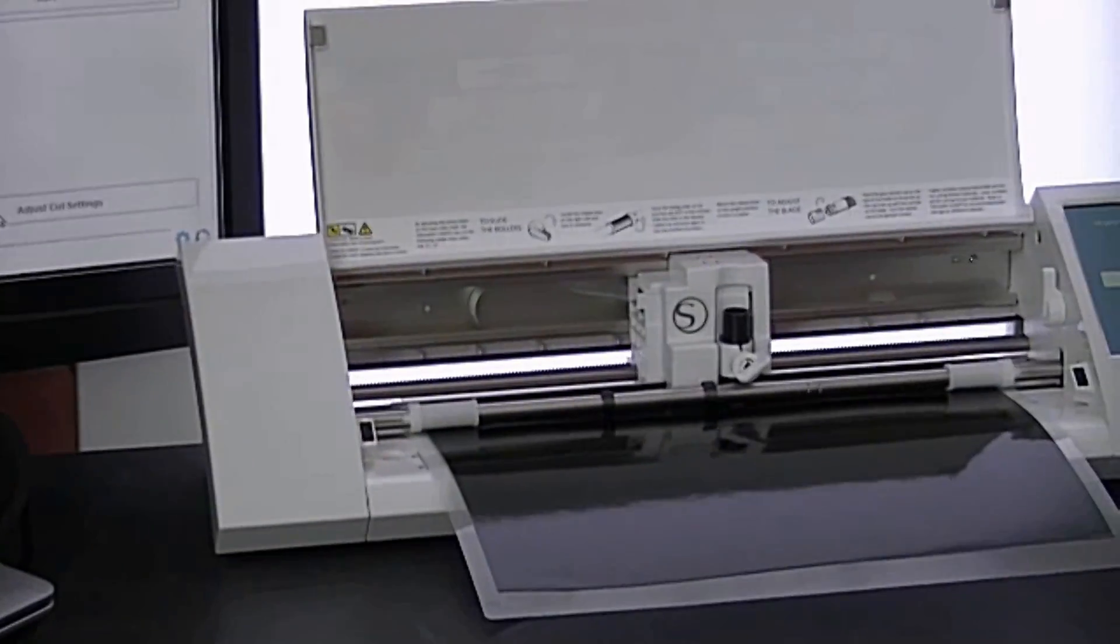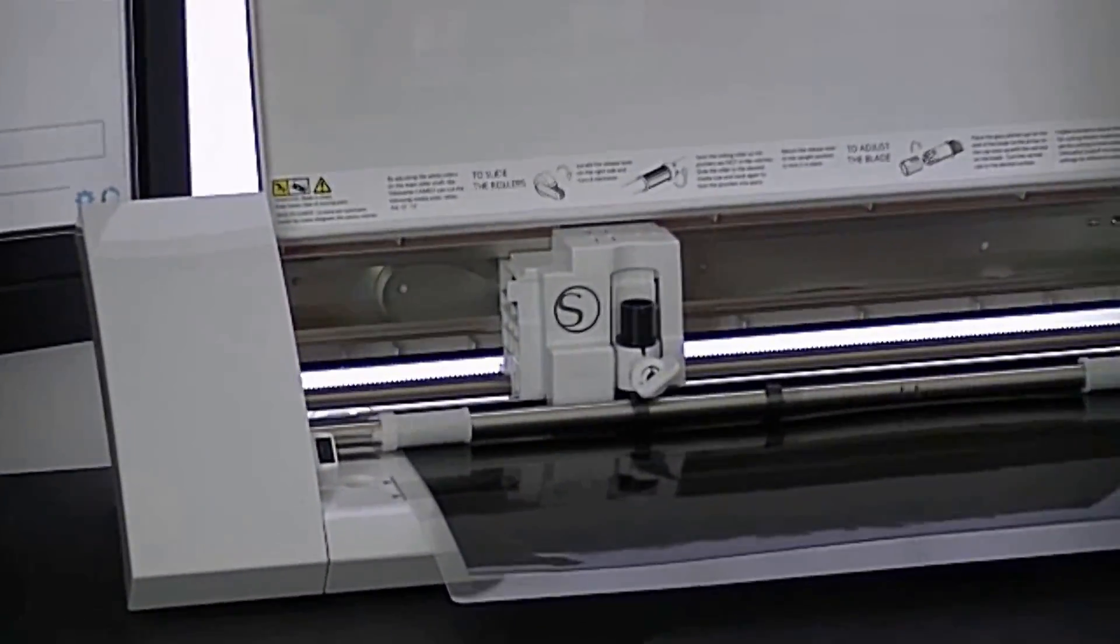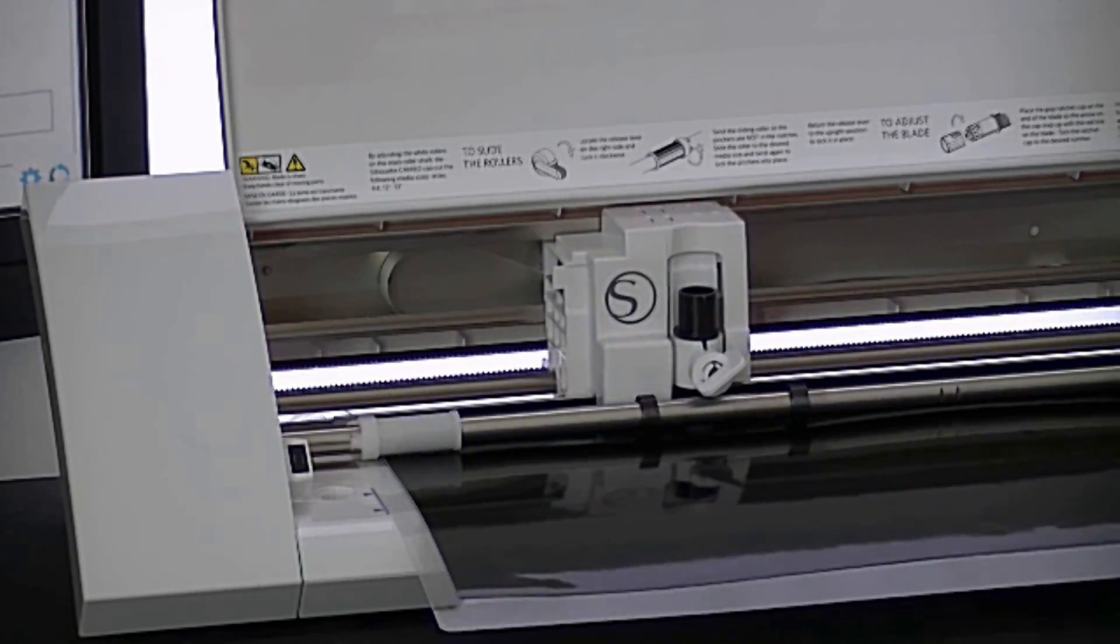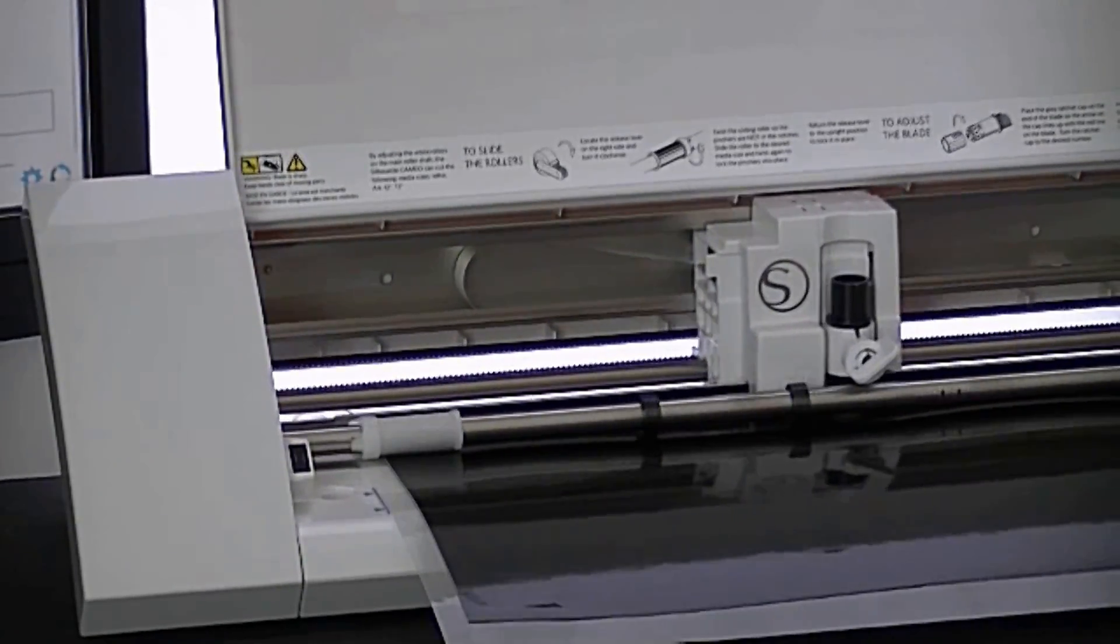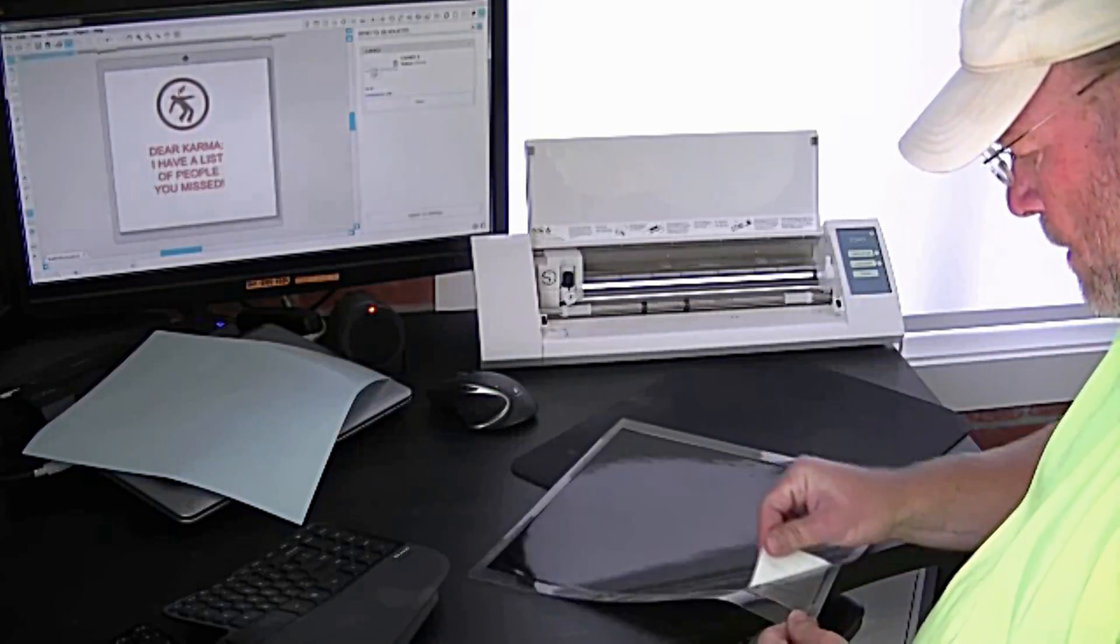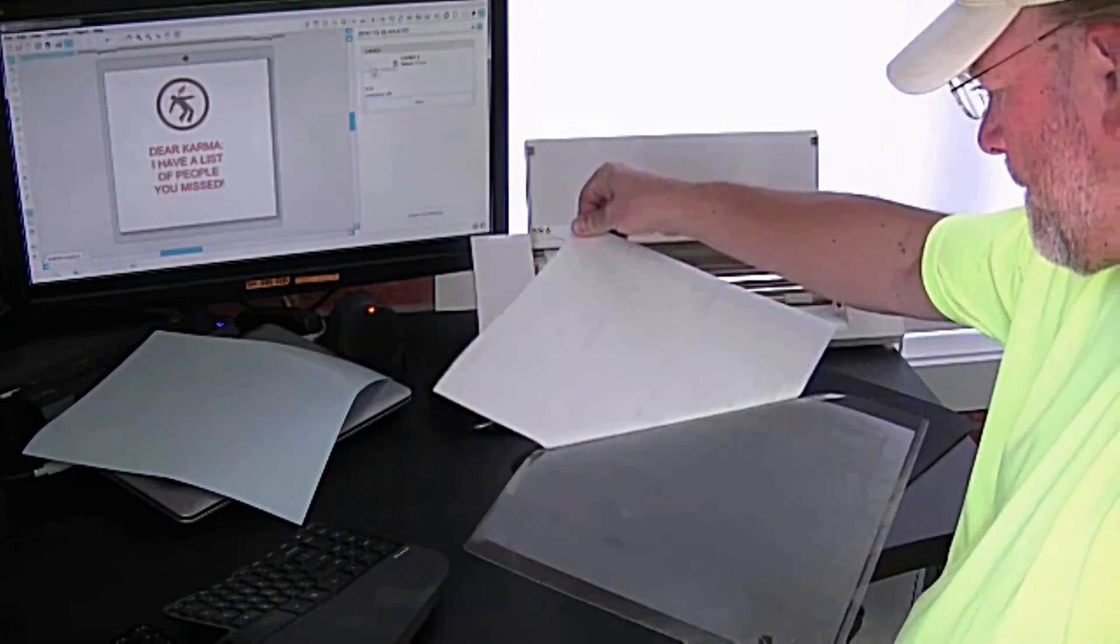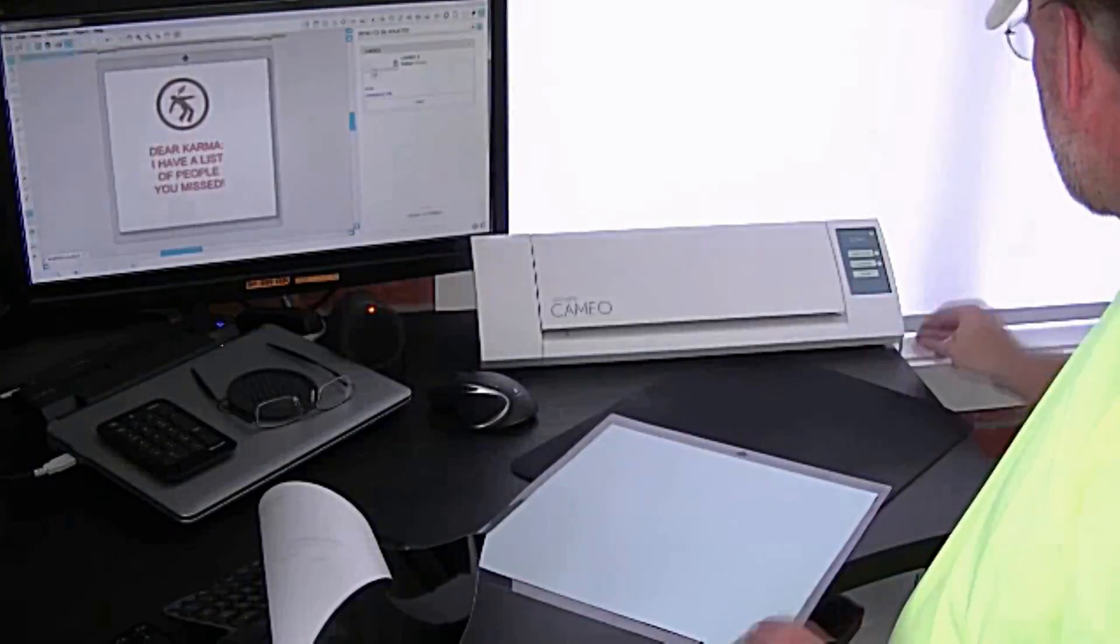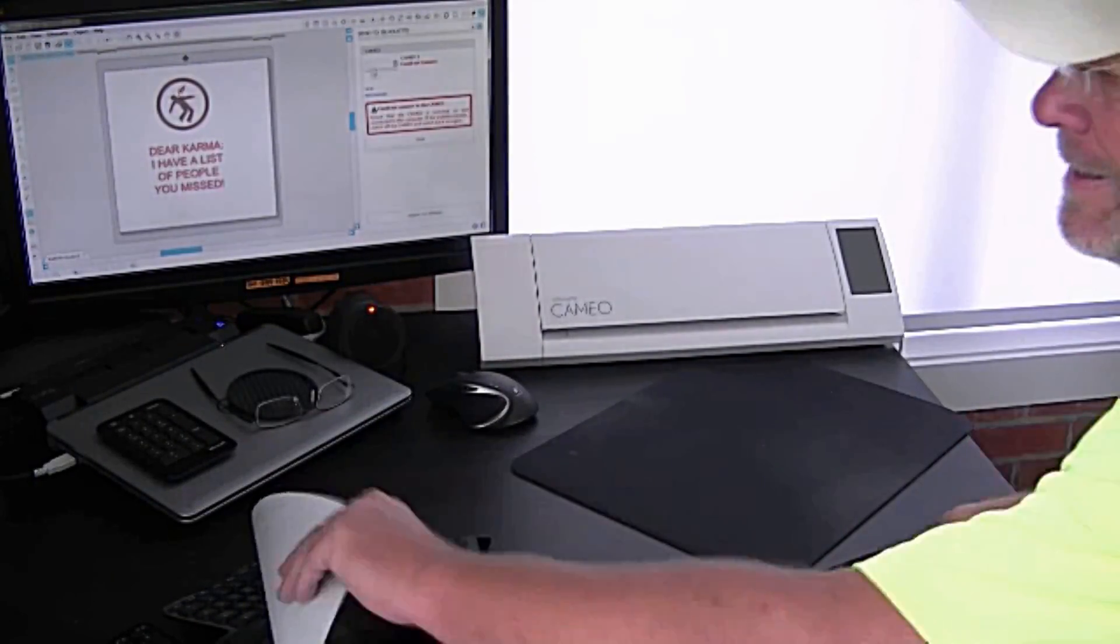I normally fill up a full sheet here of graphics and images to use the vinyl as best as I can and most efficiently. But here I've just put the one image and peel this off. That's a sticky mat so it holds the vinyl on there, and that's why I put the protective cover back on it.